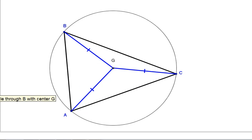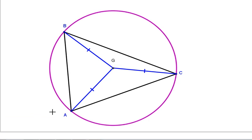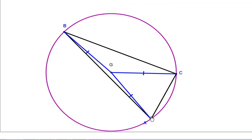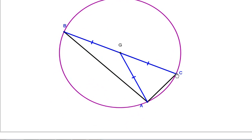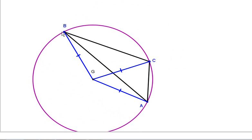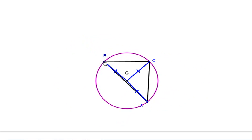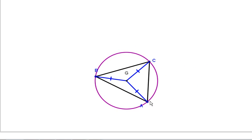So this circle is special, because no matter how our triangle looks, the circle will always pass through all three vertices. And it will always have G as its center.